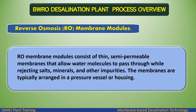RO Membrane Modules consist of thin, semi-permeable membranes that allow water molecules to pass through while rejecting salts, minerals, and other impurities. The membranes are typically arranged in a pressure vessel or housing.